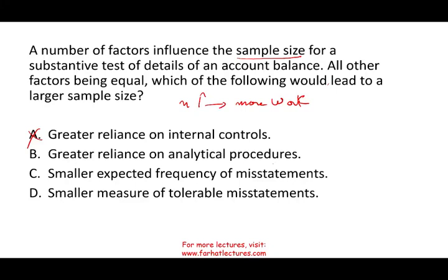Option B: greater reliance on analytical procedures. If I can rely on analytical procedures, it means there is some stable relationship between the accounts that I can trust. If that's the case, I don't need to do more work — I do less work. Now we're down to 50-50. Option C: smaller expected frequency of misstatement. If I'm expecting smaller expected frequency, I'm expected to find less error. If that's my expectation, the population is good, and I'll have to do less work. C is out.